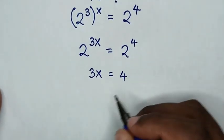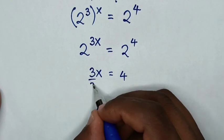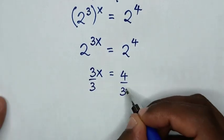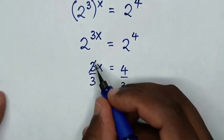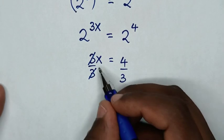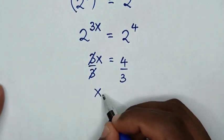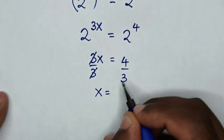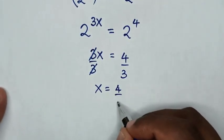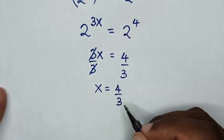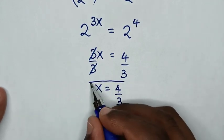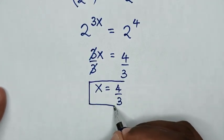Then we divide by 3 on both sides. This and this will cancel. So here it will be x is equal to 4 over 3. This is the final answer for the value of x.